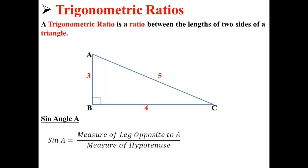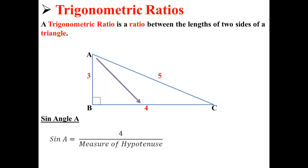So let's find the sine of angle A. Well, the measure of the leg opposite to A, in this case, is 4, as you can see from the purple arrow. And here, the measure of our hypotenuse is 5. So sine A is equal to 4 over 5, or 0.80.